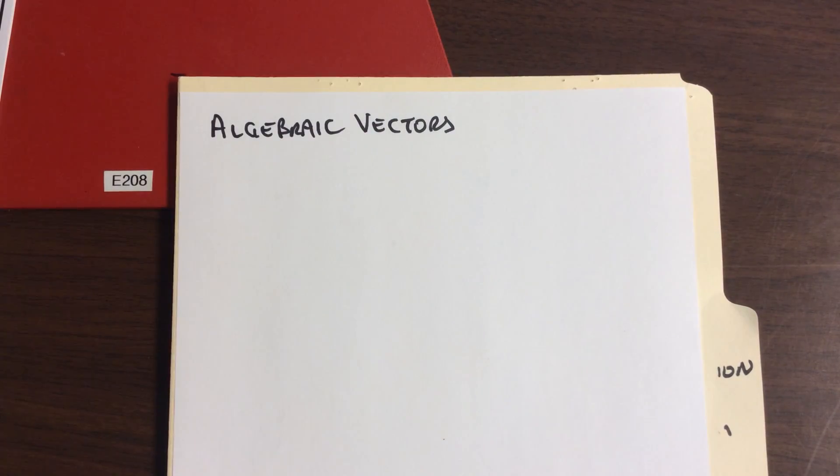So vector, two pieces: magnitude and direction. What we can do, how we saw these before, when we talk about algebraic representations of vectors, it's putting numbers to them.